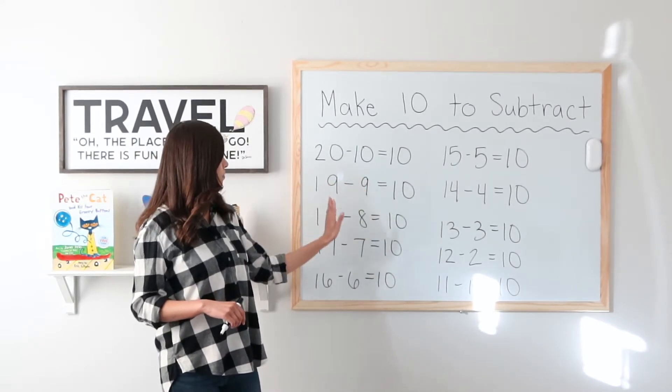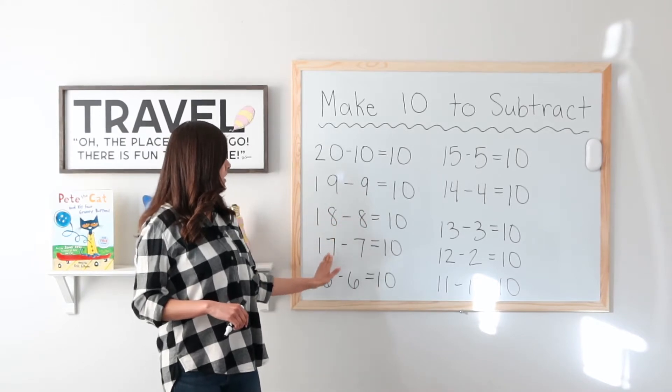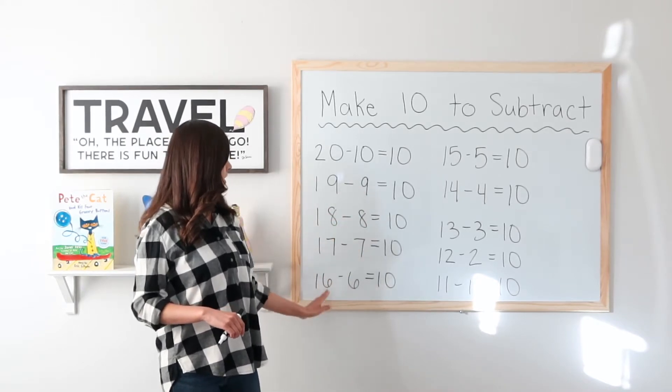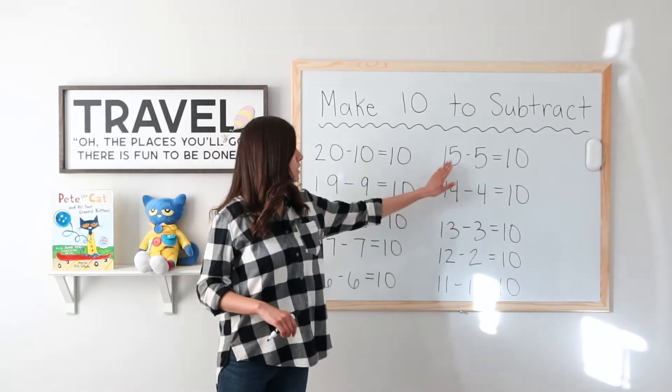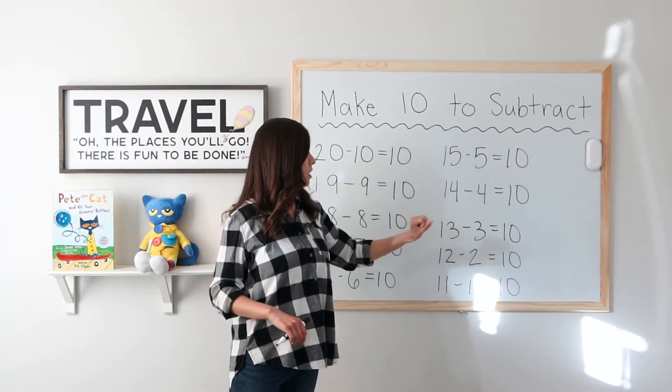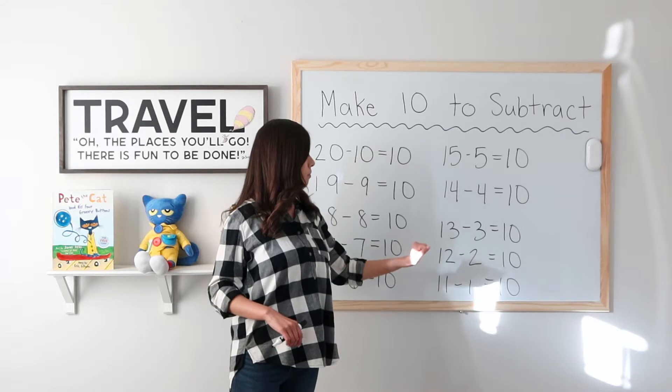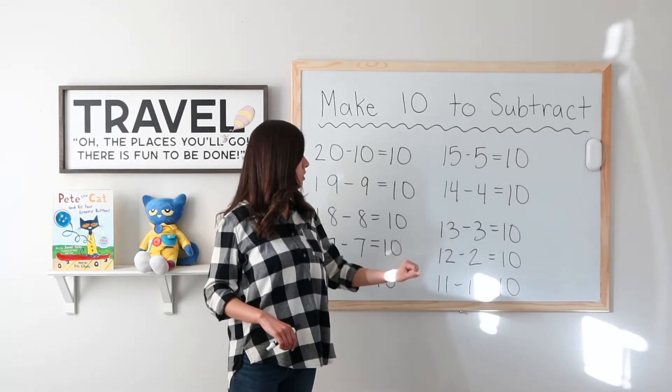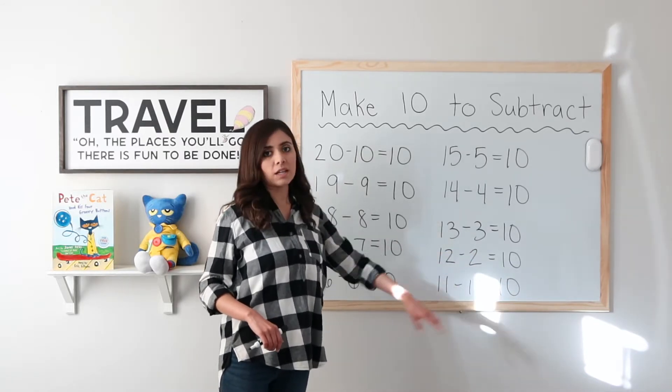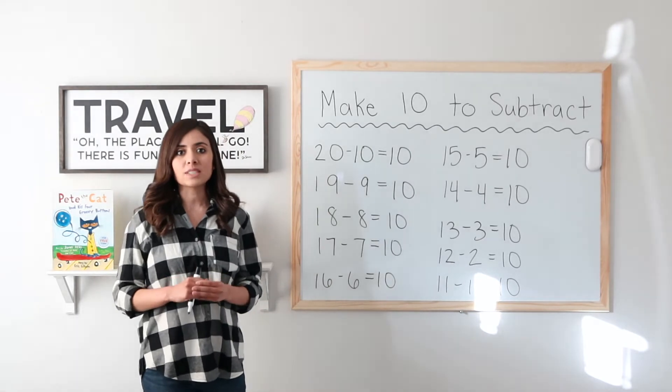Now let's look at the other numbers. I have 19 minus 9, 18 minus 8, 17 minus 7, 16 minus 6, 15 minus 5, 14 minus 4, 13 minus 3, 12 minus 2, 11 minus 1. All of those are different ways to get 10.